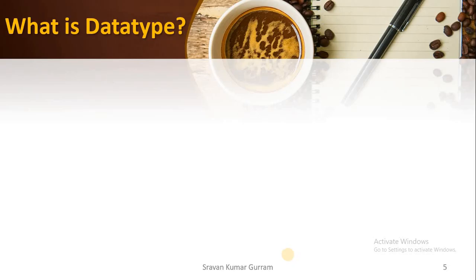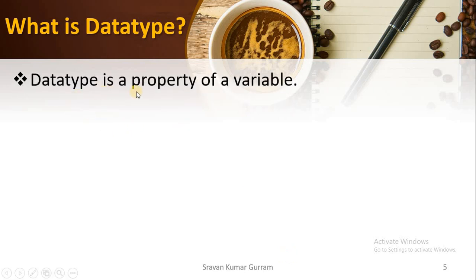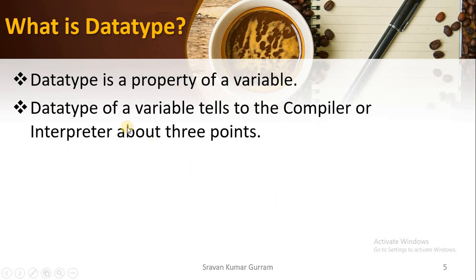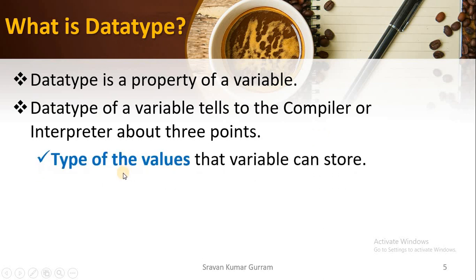Now let us understand what is data type. Data type is a property of a variable. When we declare the data type of a variable in our program, it tells the compiler or interpreter three important things. First, what type of values that variable can store — if you want to store numbers or names, you must specify the relevant data type. For example, if you want to store numbers, specify the data type as integer; if you want to store names, specify it as string type.